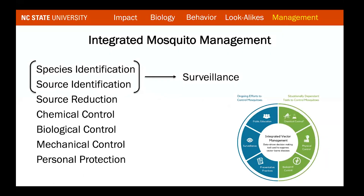Like many urban and medical pests, we're approaching mosquito management with a more integrated approach. For mosquitoes specifically, this is called integrated mosquito management, or IMM. IMM combines two sets of tactics: one used continuously for long-term control, and another used in a situation-dependent manner — for when mosquitoes are a problem right now. Ongoing efforts include public education, surveillance, and preventative practices, while situation-dependent control involves chemical application, physical trapping, or biological control.